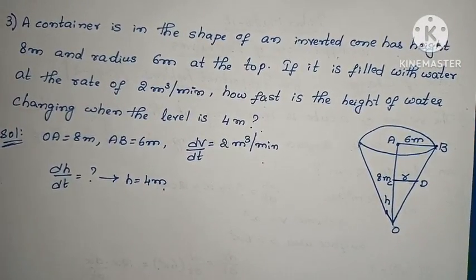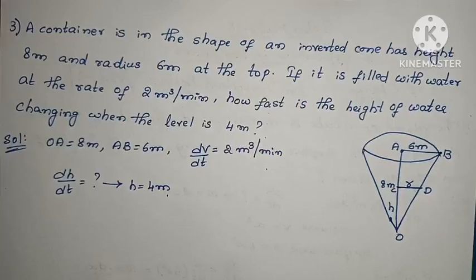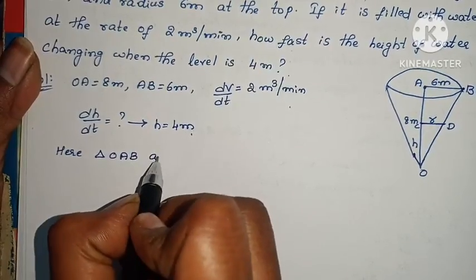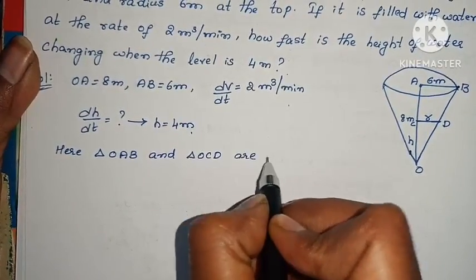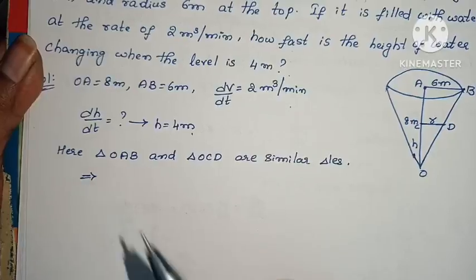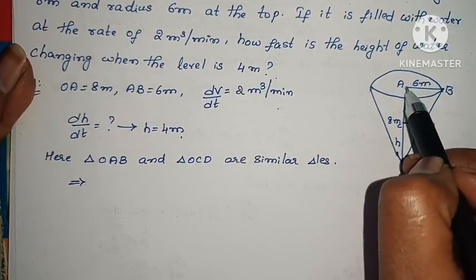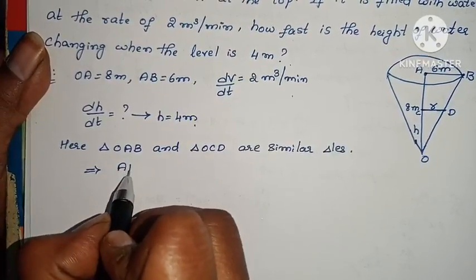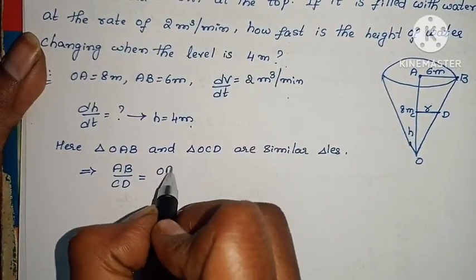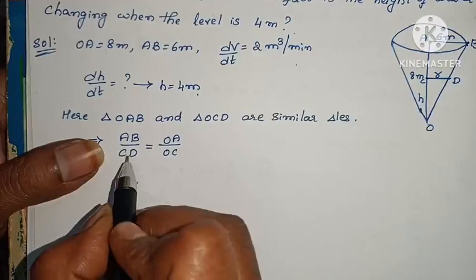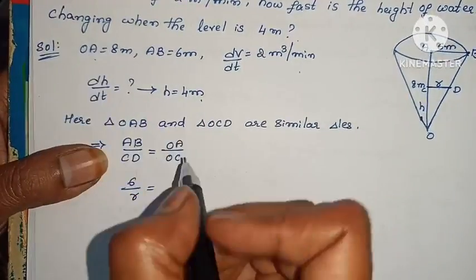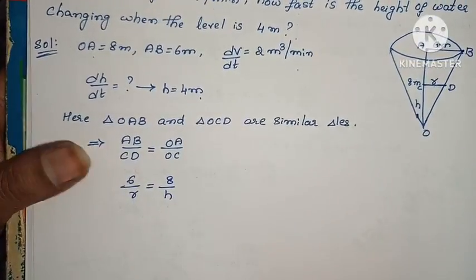Height is 8 meters, radius 6 meters. Triangle OAB and triangle OCD are similar triangles. If you have similar triangles, the ratio is equal. AB by CD equals OA by OC. AB is 6, CD equals R. So 6/R equals 8/H. Therefore R equals 3/4 H.